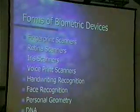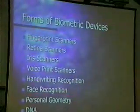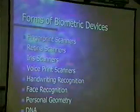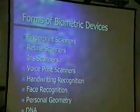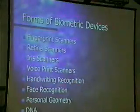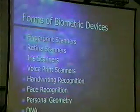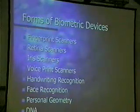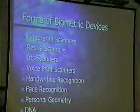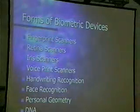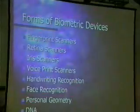Voice print scanners are becoming more popular — basically a standard microphone with software that determines if you're talking the same way you always have. Handwriting recognition is similar to signature verification for a credit card, but computerized. Face recognition happened at the Super Bowl — cameras take pictures of people and match them against a database. Personal geometry, like hand geometry, uses the shape of your hand. DNA is the most accurate but too slow for a network security setting right now.